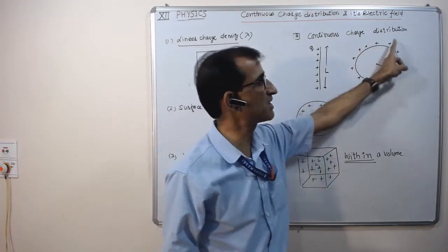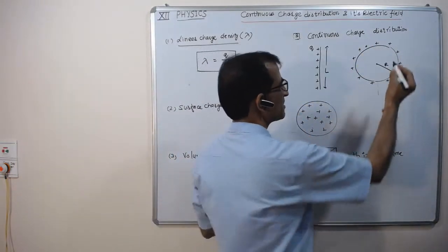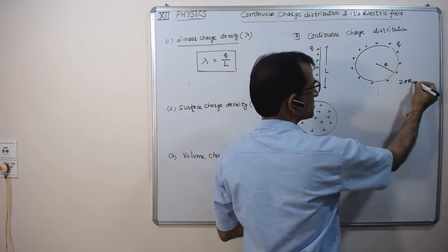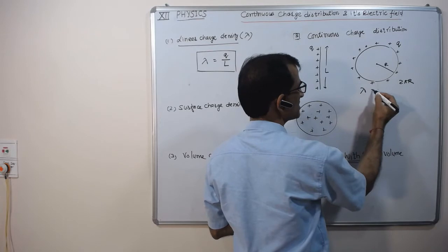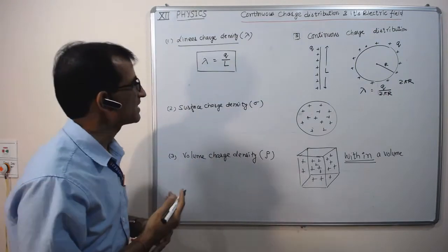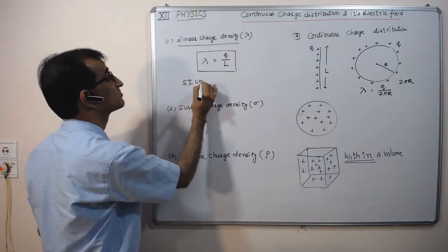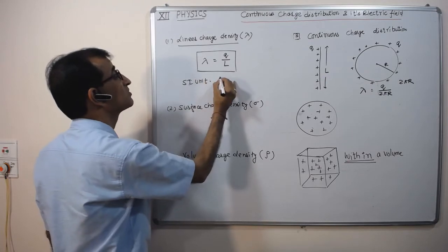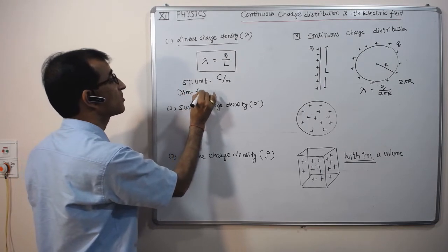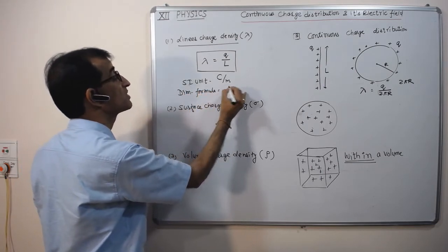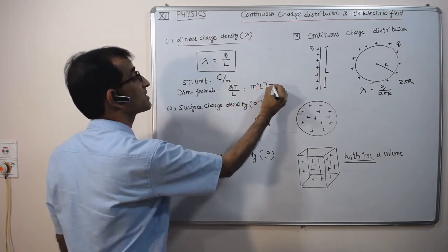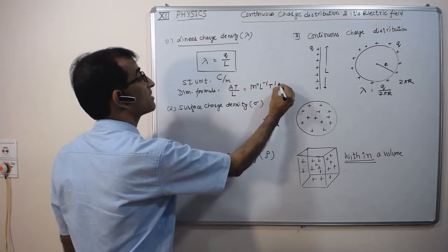The SI unit of linear charge density is coulombs per meter (C/m), and its dimensional formula is M⁰ L⁻¹ T¹ A¹.